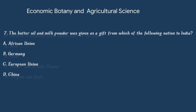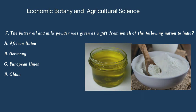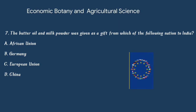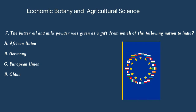Question number 7. The butter, oil and milk powder was given as a gift from which of the following nation to India? Option A: African Union. Option B: Germany. Option C: European Union. Or option D: China. The answer is option C: European Union.